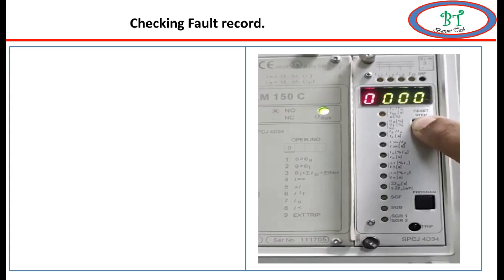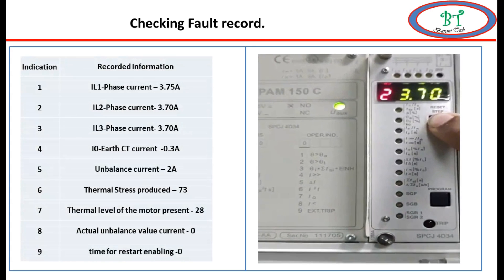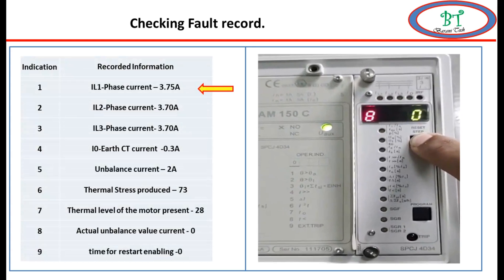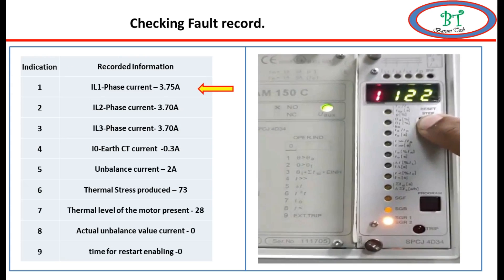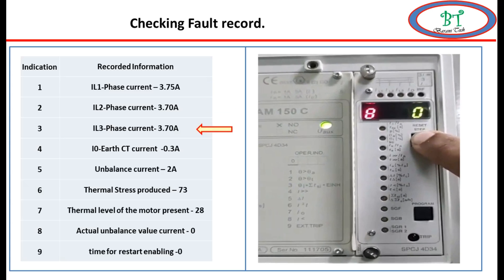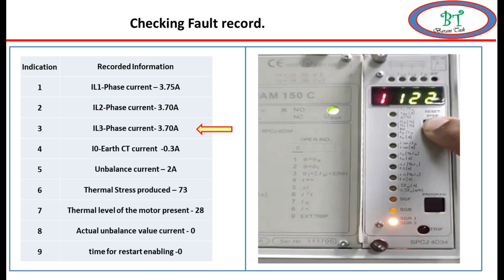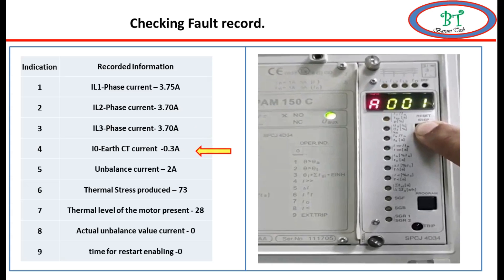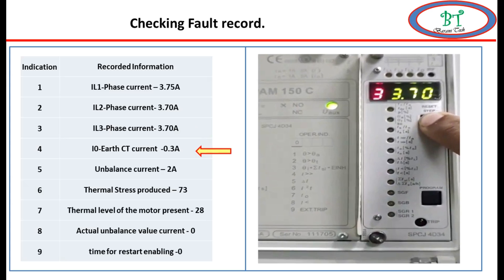Indication 1 is for R phase current. During any abnormal or above full load current, if the motor goes above the full load current, it will be recorded here. Indication 2 is similarly for Y phase, and indication 3 is for B phase. Indication 4 is for earth fault. For earth fault setting, if we give the value 0.3A, if the value goes beyond 0.3A, this value will be captured here.